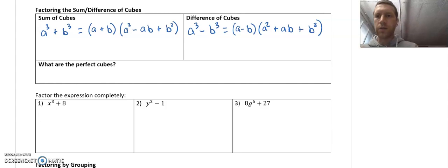Alright, so the best way to learn your perfect cubes is just to list them out and practice those. So perfect cubes: 1 cubed is 1, 2 cubed is 8, 3 cubed is 27, 4 cubed is 64.